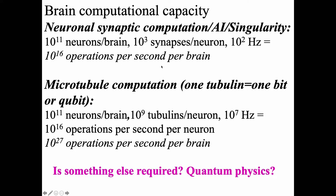It would be much more difficult if you consider microtubule computation, where one tubulin state equals one bit: a hundred billion neurons, a billion tubulin per neuron at about 10 to the 7th hertz — 10 megahertz, one of the frequencies of oscillation of tubulin and microtubules. This gives 10 to the 16th operations per second per neuron — the equivalent of the whole brain at the neuron level — and 10 to the 27th operations per second per brain. But it didn't explain consciousness; it's just more computation.